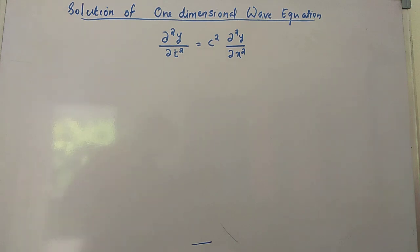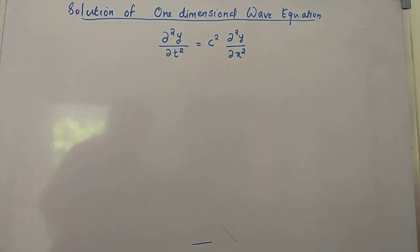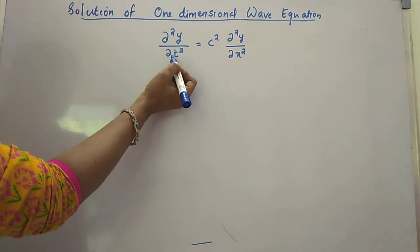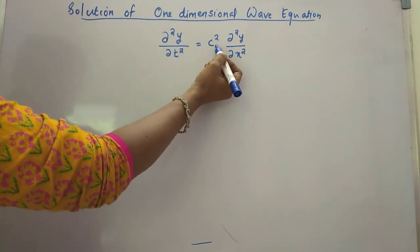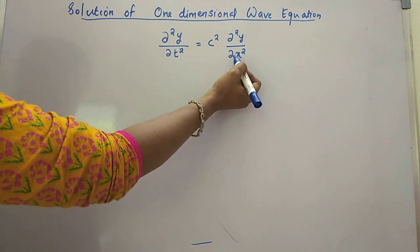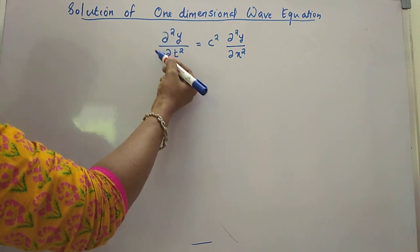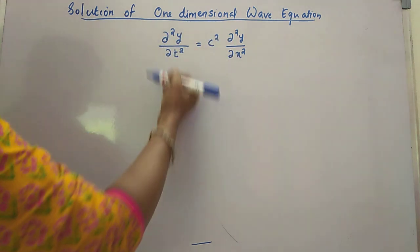Good morning students. Today we discuss how to find the solution of the one-dimensional wave equation. The partial differential equation for the vibration of an elastic string, which is known as the one-dimensional wave equation, is given by ∂²y/∂t² = c² · ∂²y/∂x². Let us check out the terms that appear in the equation.